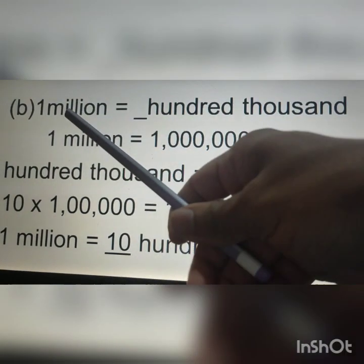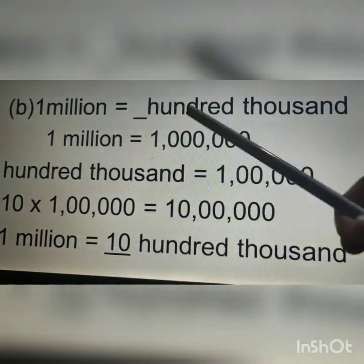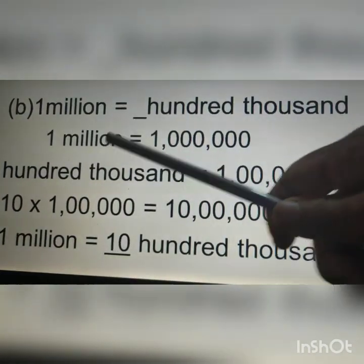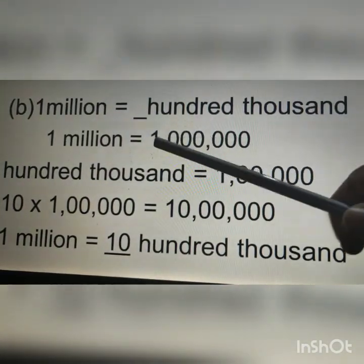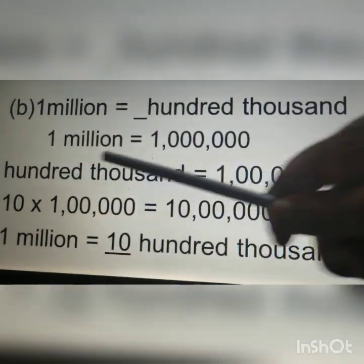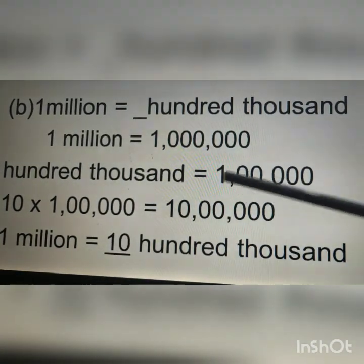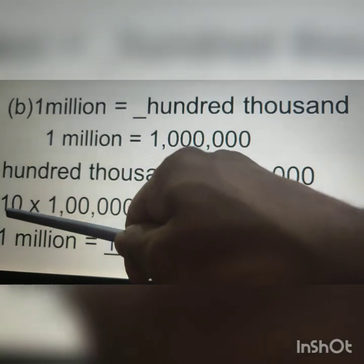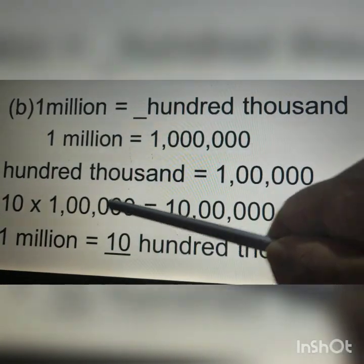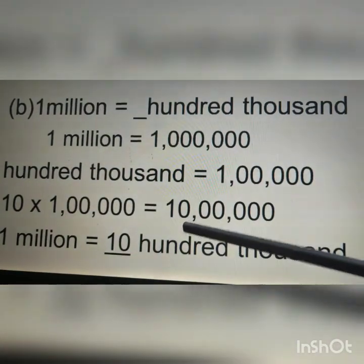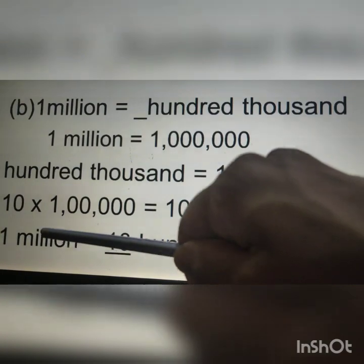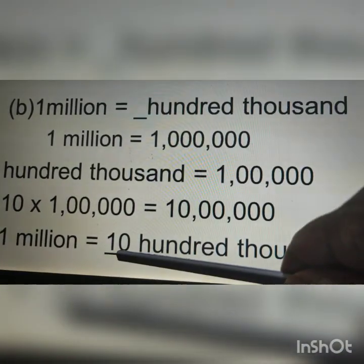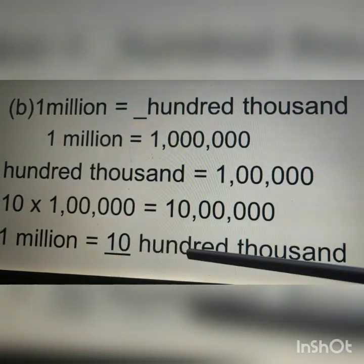Next question: 1,000,000 is equal to how many 100,000? We know in 1,000,000 there are 6 zeros and in 100,000 there are 5 zeros. If we multiply 10 with 100,000 we will get 10 lakhs, that is 1,000,000. Therefore, 1,000,000 is equal to ten 100,000s.